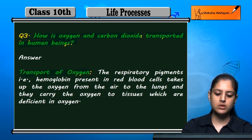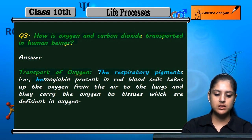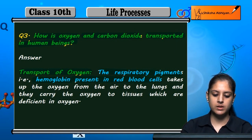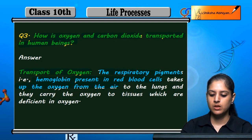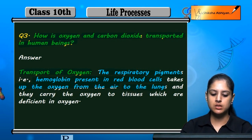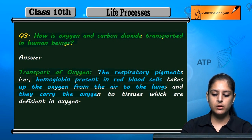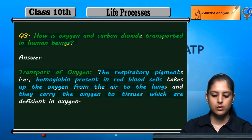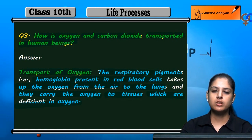First, let's see oxygen transport. The respiratory pigments like hemoglobin, which are present in red blood cells, take up oxygen from the air in the lungs. From the lungs, they carry the oxygen to the tissues which are deficient in oxygen.